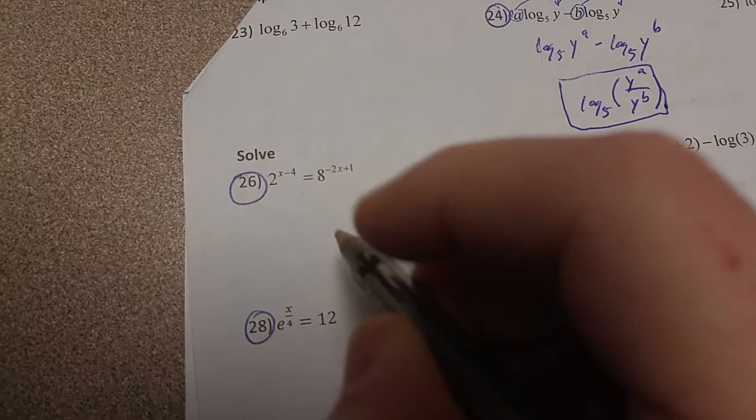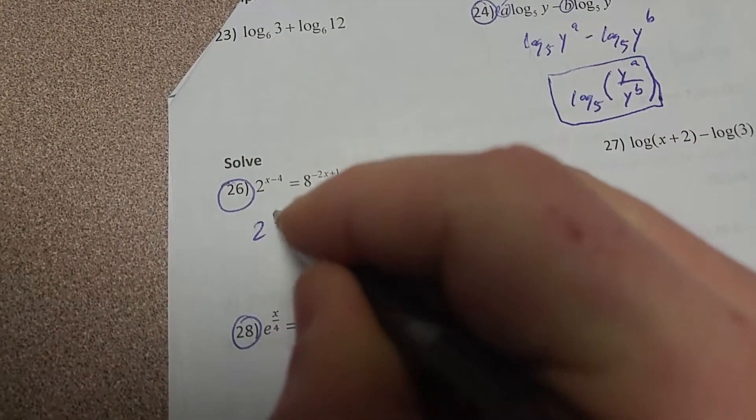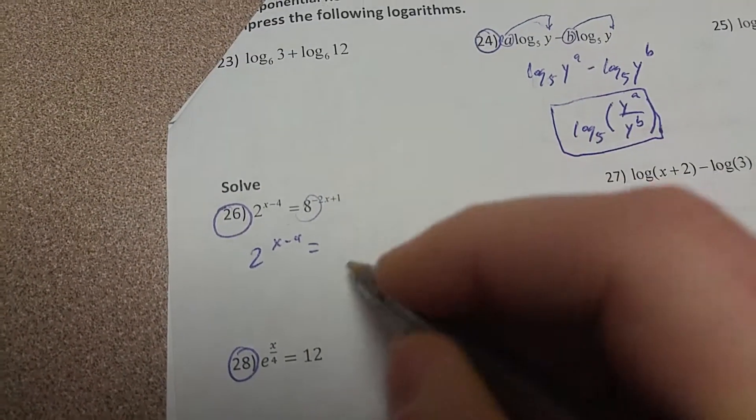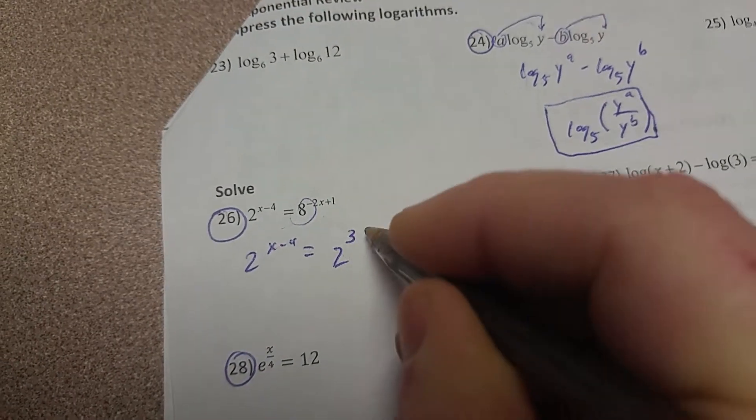But this one's already set up for us ready to do it. So this is going to be 2 to the x minus 4 equals—how else can I rewrite 8? Well, I can rewrite it as 2 cubed.